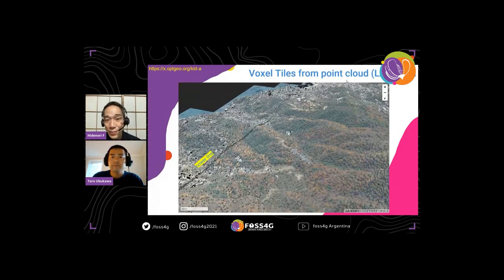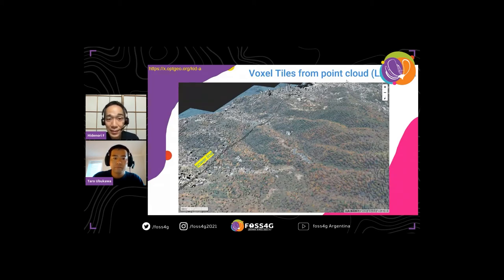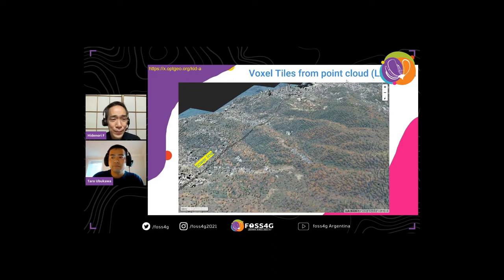Another example is the adoption of point cloud data. Shizuoka prefecture in Japan is kindly providing all their point cloud data to the public as open data. I am trying to convert this point cloud data into vector tiles in the form of voxel data, which is polygon data but has height information, and I visualize it as a kind of voxel form. I am really satisfied that we can see power lines landing in this voxel data. I think this can be useful if someone is trying to fly a UAV or drone in this area, and I hope we have more opportunity to use point cloud data for more real-time purposes.